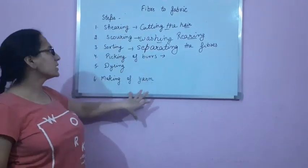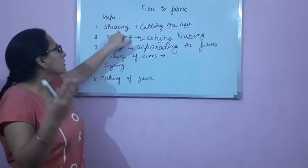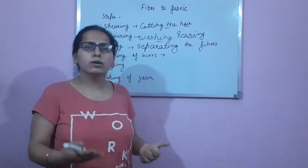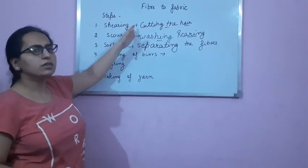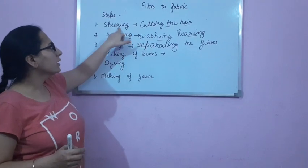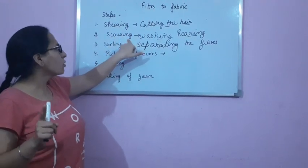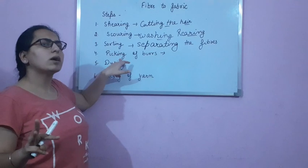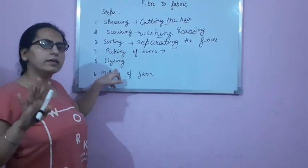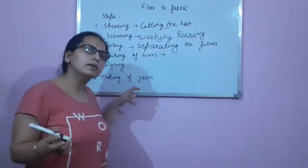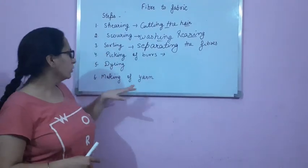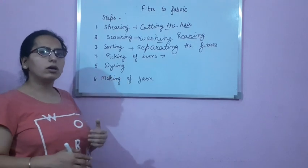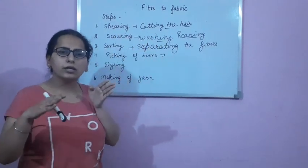So these are the different steps. In shearing, we cut the hair using a trimmer — just like at a barber shop. After cutting the hair, we wash it, which is scouring. We separate the hair on the basis of their texture, which is sorting. Then we pick out the burrs from the hair. Then the hairs are dyed in various colors. And then they are straightened, combed, and rolled into yarn. These are the steps involved in processing fibers into wool.